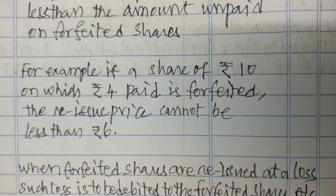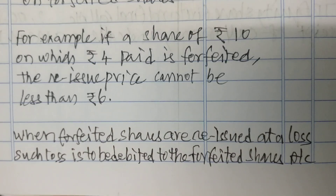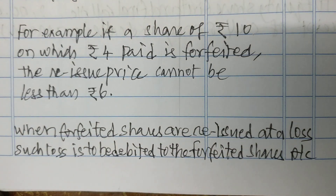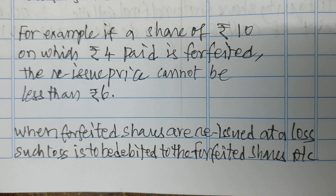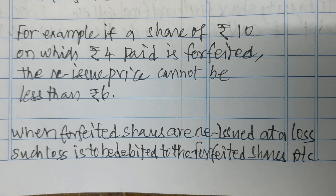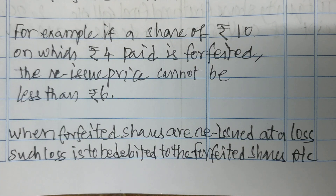When forfeited shares are reissued at a loss, such a loss is to be debited to the forfeited shares account.